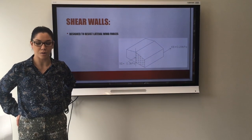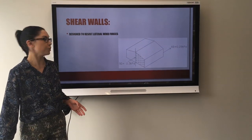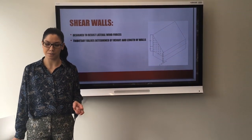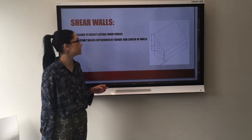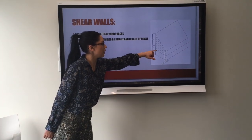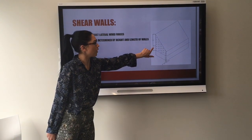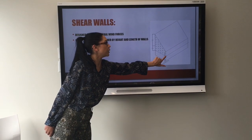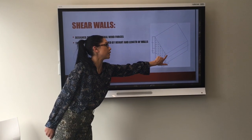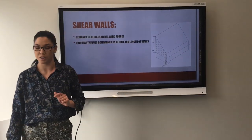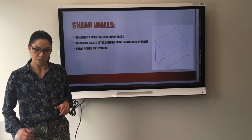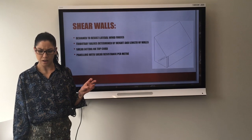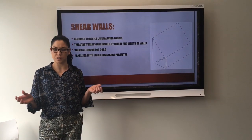We designed our shear walls to resist lateral wind forces. The tributary value is determined by height and length of the walls. We took the height of the roof and half the height of the actual wall to get the force that would be acting on this point, and we know this point is going to be a larger force than this, so that's the one we use to decide our shear force. Shear acting on the top cord there, that's going to be the strong force, and we picked a paneling with shear resistance per meter.